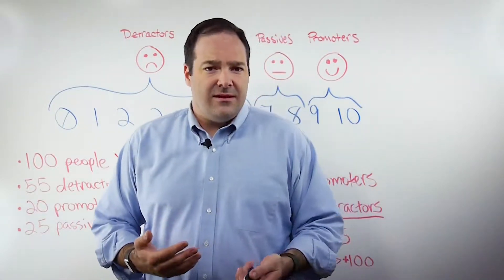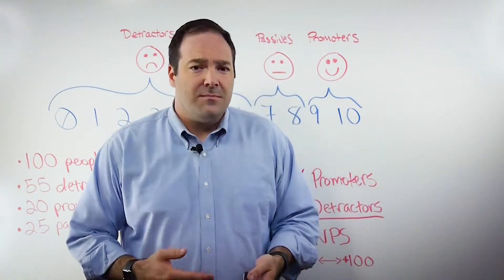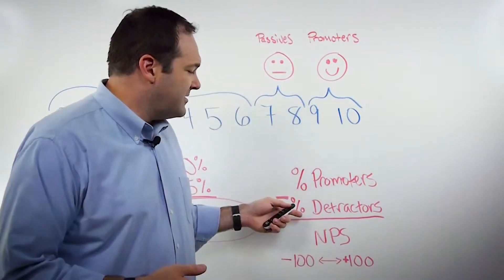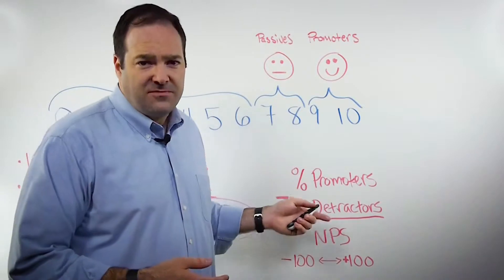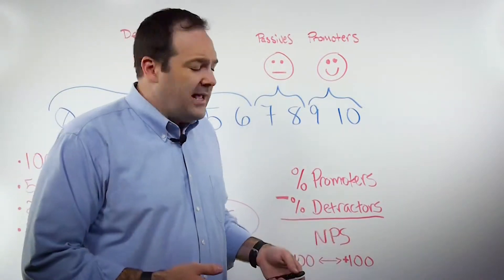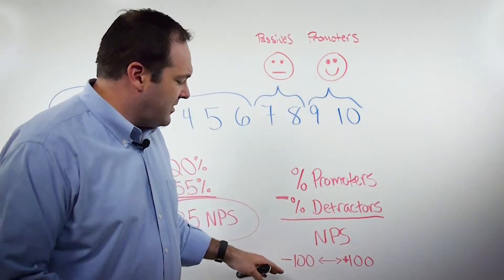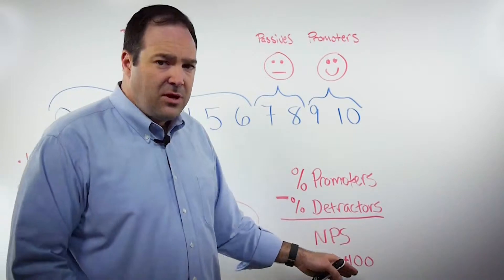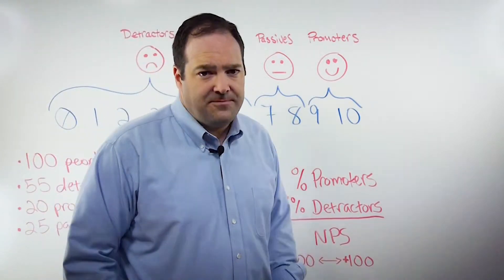You then calculate your NPS score by subtracting the percentage of detractors from the percentage of promoters. The result is an NPS score that can range between negative 100 and positive 100.